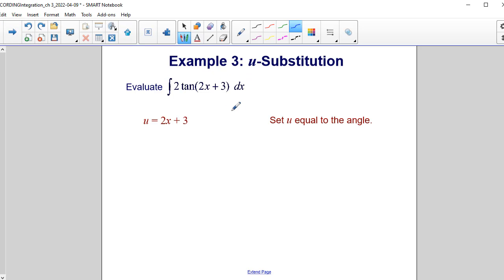Our first step will be to set u equal to the angle. Now typically, when you are using u substitution, you want to use the variable u to represent any function that is contained within another function. For example, in this case, it's a trig function, so u would be the angle within the trig function.